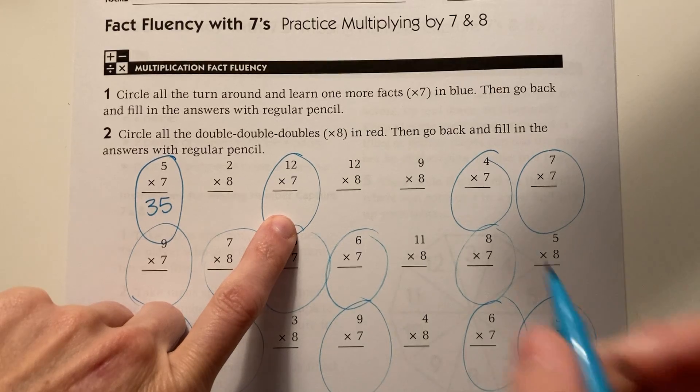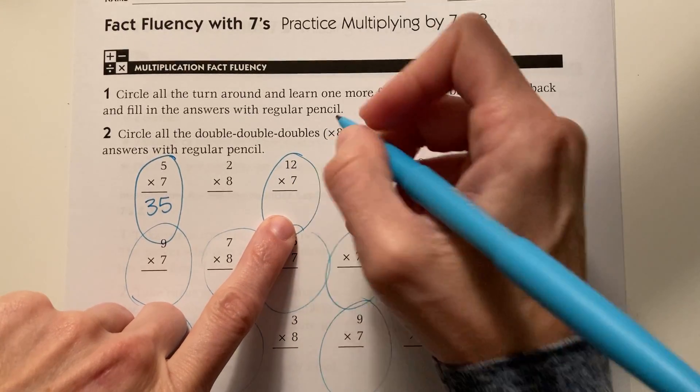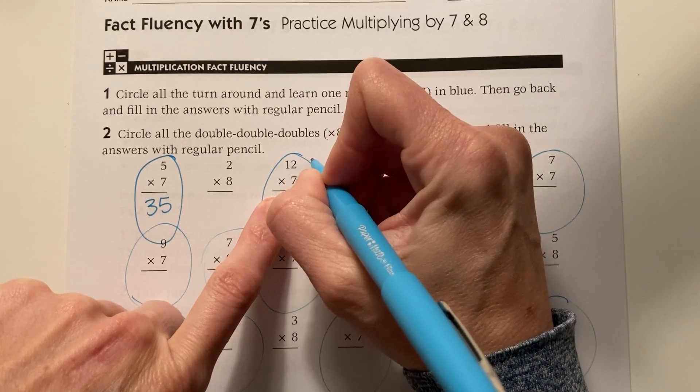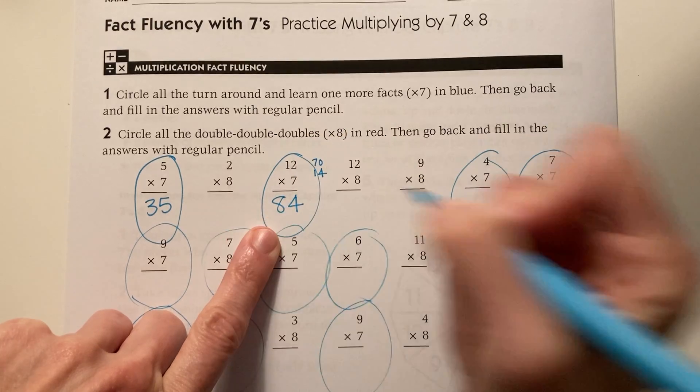Twelve times seven, same as seven times twelve. I could do my decade plus two sets. So ten times seven is seventy. Two times seven is fourteen. If I add those together, I get eighty-four.